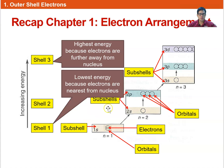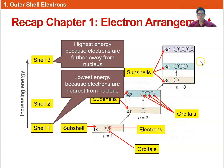We also learned how to fill out each of these orbitals. Shell one has only one subshell: 1s. Shell two has 2s and 2p subshells. Shell three has 3s, 3p, and 3d. Remember that the filling order is: 3s, 3p, 4s, then only 3d.